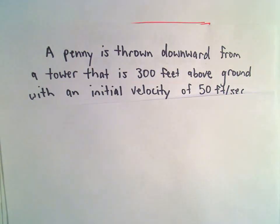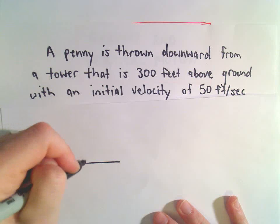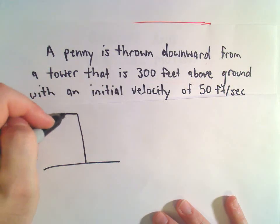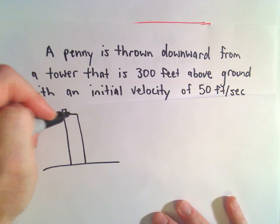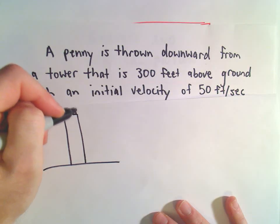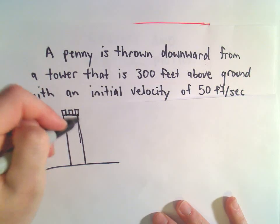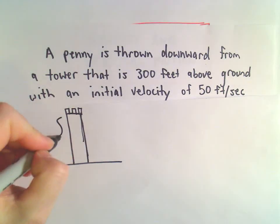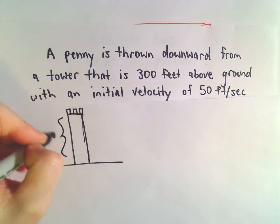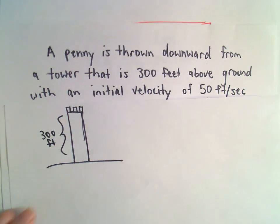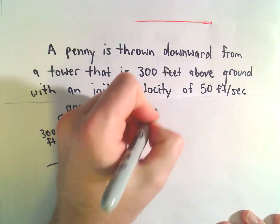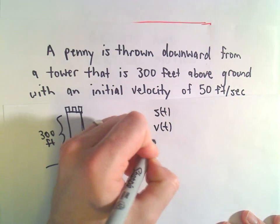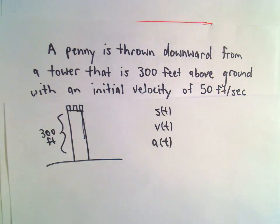I like to write down my initial conditions at the beginning. There's our little tower — we know it's 300 feet above the ground. I'm going to use S for position, V for velocity, and A of t for acceleration.